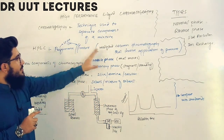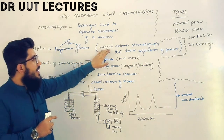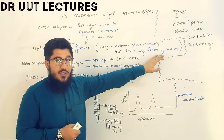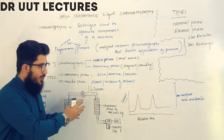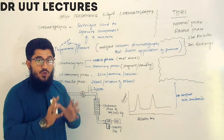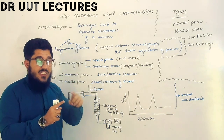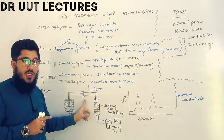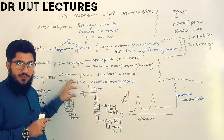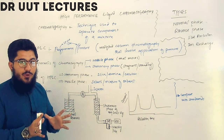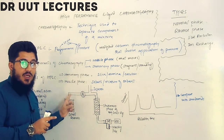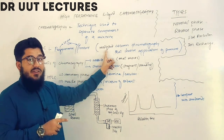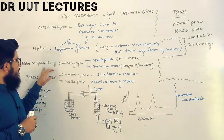HPLC is also called modified column chromatography, as it involves application of pressure. You can say this is actually a modified form of column chromatography. It is modified because of the high pressure we are using here. If we just remove the pressure, it becomes simple column chromatography. Here we are using a pressure pump, due to which it is known as modified column chromatography.